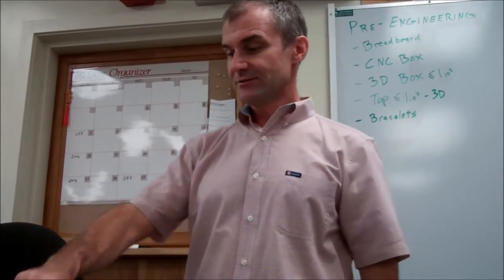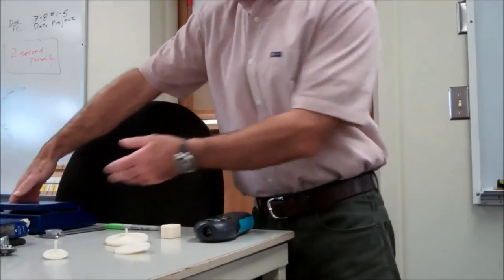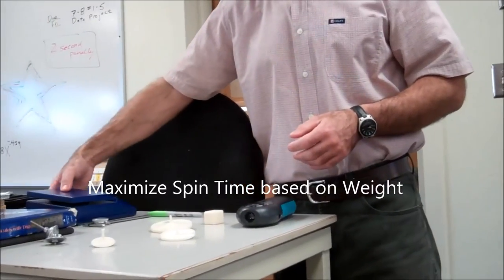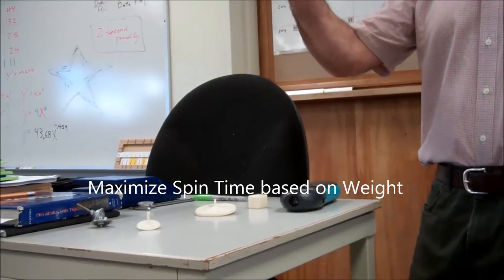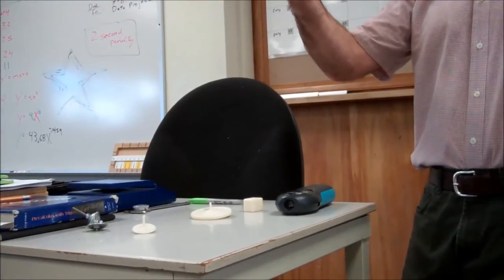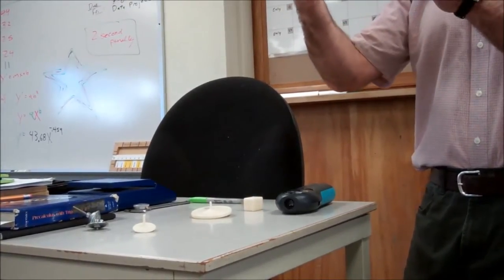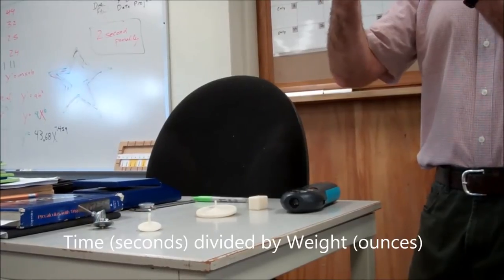And then at the end, once everybody has a top, we're going to weigh the tops on a little scale and we're going to time how long they spin for. And then the winning top will have spun the longest based on weight.